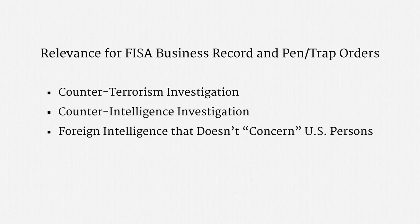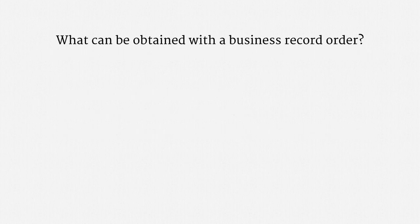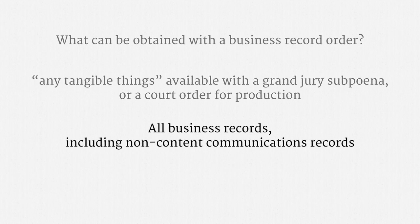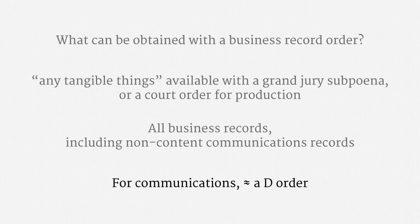A logical next question is: what can be obtained with a business record order? The statutory text reads "any tangible things available with a grand jury subpoena or a court order for production." That certainly includes all sorts of routine business records, including even medical records. That also includes any non-content communications record. So, in the context of communications, a FISA business record order can be used to obtain the same information as an ECPA deorder. Recall that a deorder requires reasonable articulable suspicion, so a business record order is an easier way to get the same information.